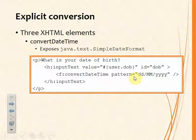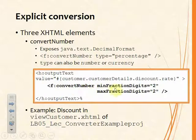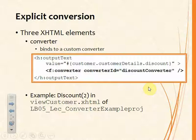Another explicit converter is f:convertNumber, which exposes the methods of Java.text.DecimalFormat. This allows us to take a double value and convert it to a string with a fixed number of decimal places for output, or take a string and convert it to a double value for input. The convertNumber converter has attributes to define the minimum and maximum number of decimal places.